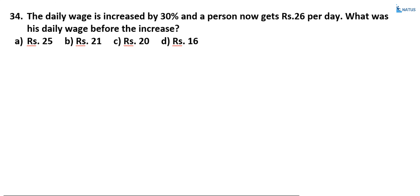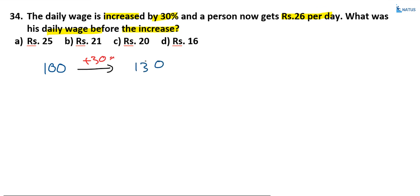The daily wage increased by 30%. A person now gets 26 rupees per day. What was his daily wage before the increase? Suppose the daily wage before increase is equal to 100. After a 30% increase, the value becomes 130.